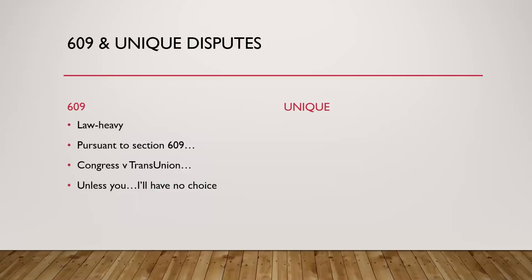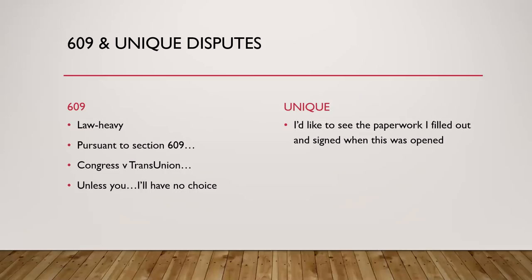With the 609 you're going to see that they're law-heavy — it says 'pursuant to section 609, Congress versus TransUnion, you have no choice.' On the unique ones it's simply: 'I'd like to see the paperwork I filled out and signed when this account was opened.' Do not send the law-heavy 'pursuant to section 609, Congress versus TransUnion' type of disputes. Simply state: 'Equifax, Experian, TransUnion — I need to see the paperwork.' It's as simple as that.